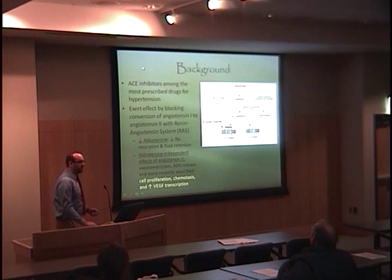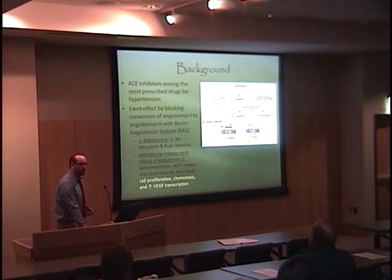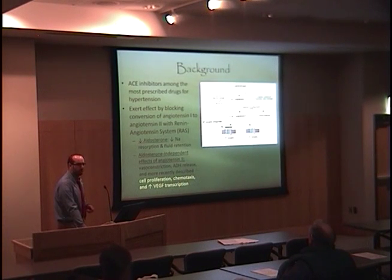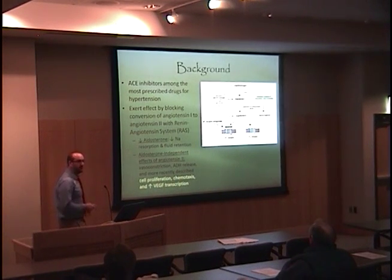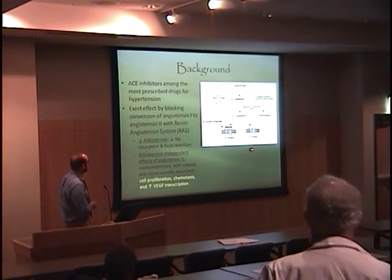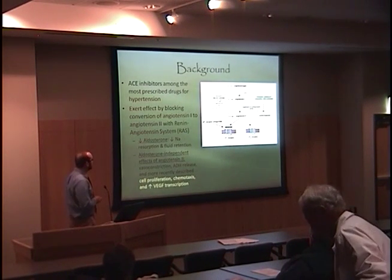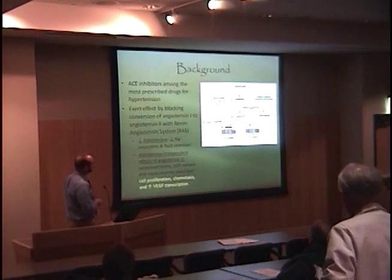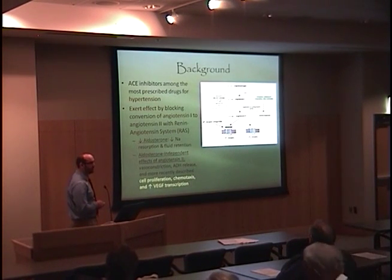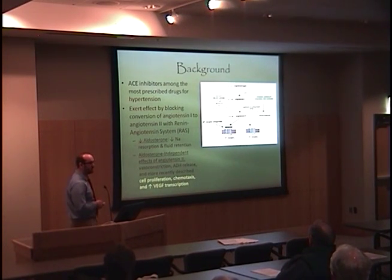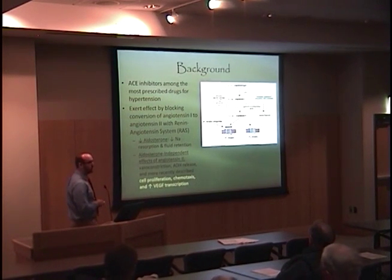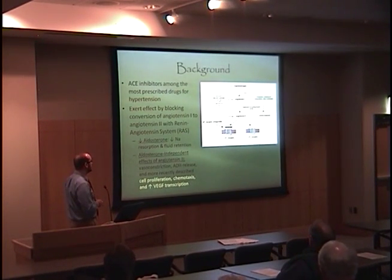By way of introduction, those of you with clinical experience know that ACE inhibitors — enalapril being one — are among the most common antihypertensives prescribed for hypertension, and they have been since the 1960s when they were introduced. They act on the renin-angiotensin system, specifically at the conversion of angiotensin 1 to angiotensin 2 by angiotensin-converting enzyme. Angiotensin 2 carries out most of the physiologic functions in this cascade and acts on two well-described receptors: the AT1 receptor and the AT2 receptor.